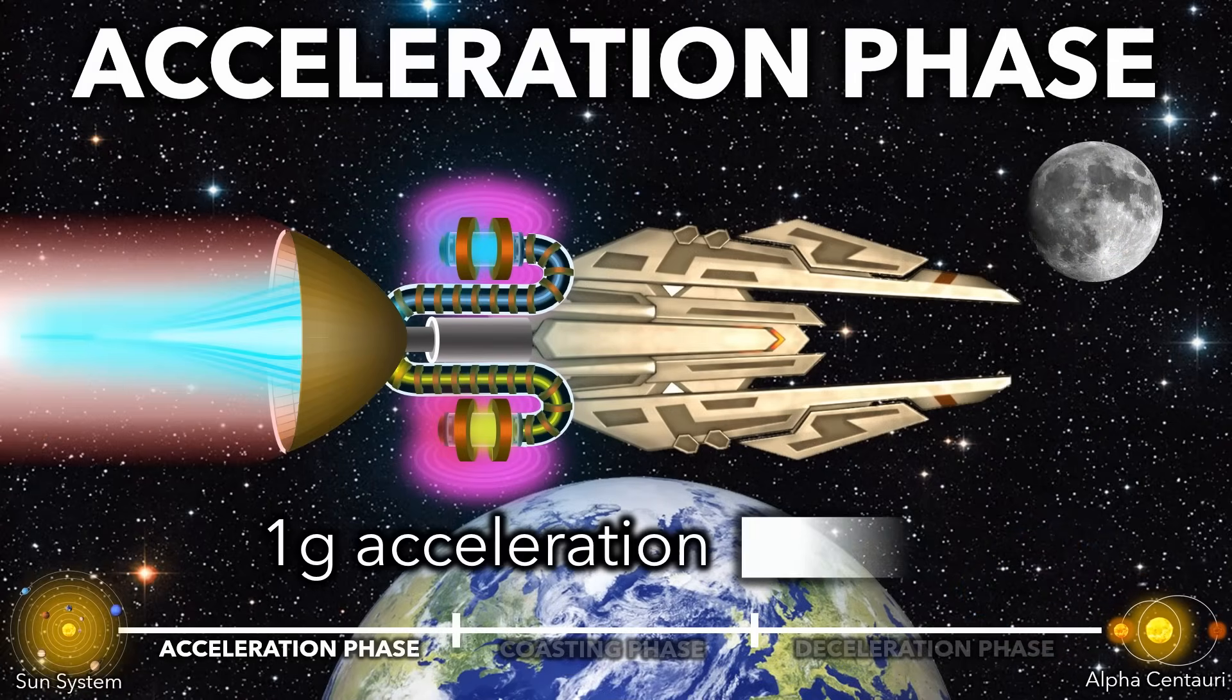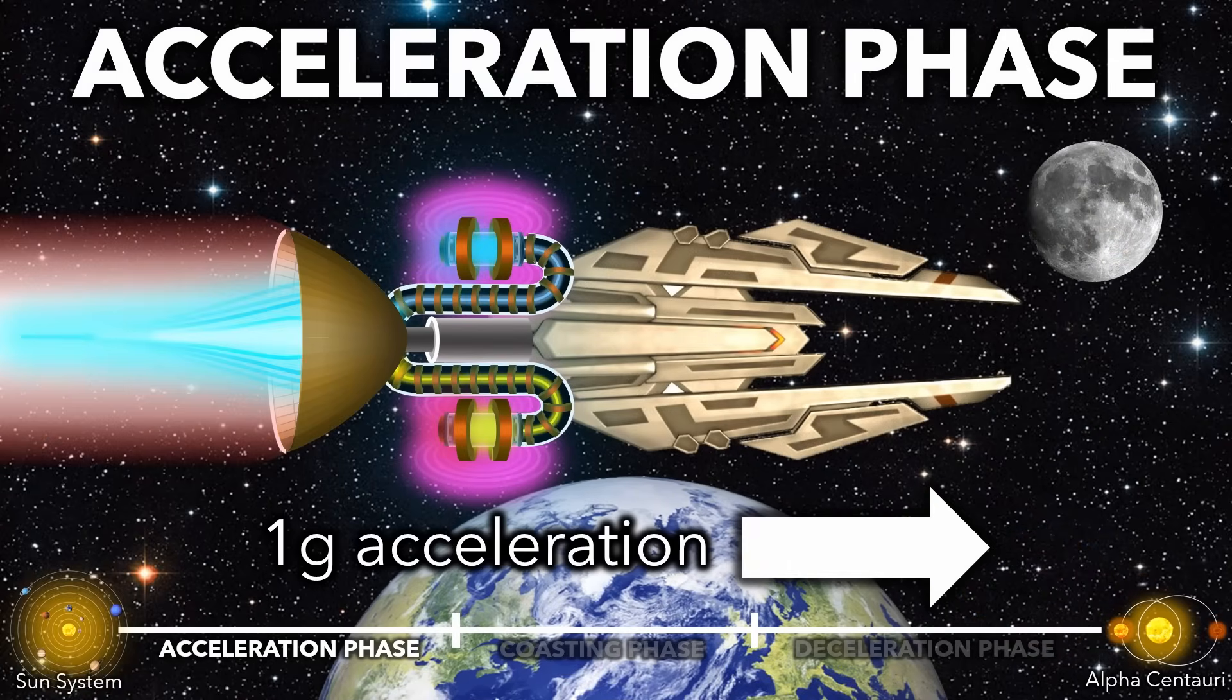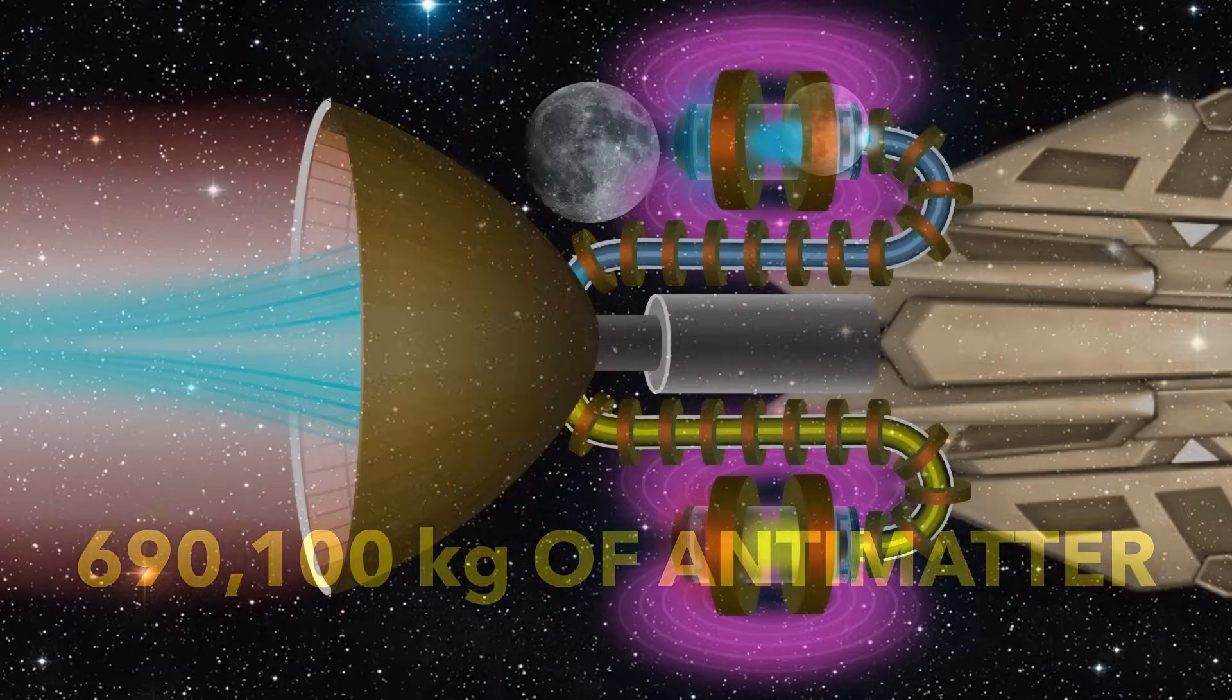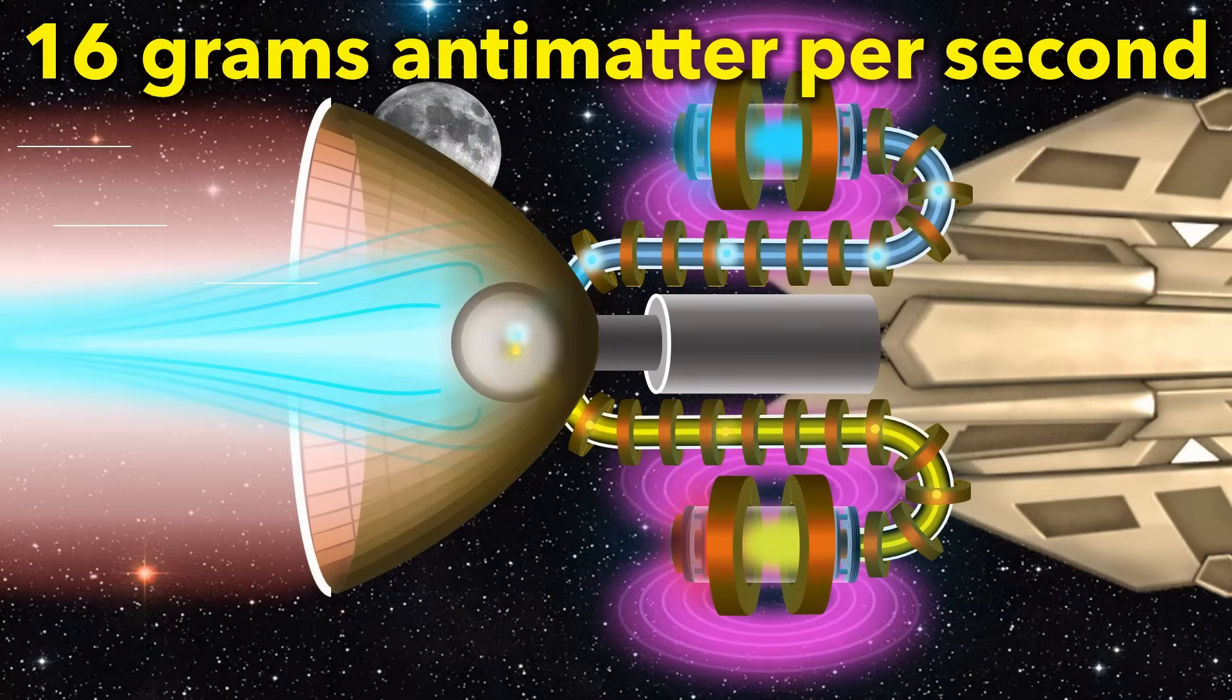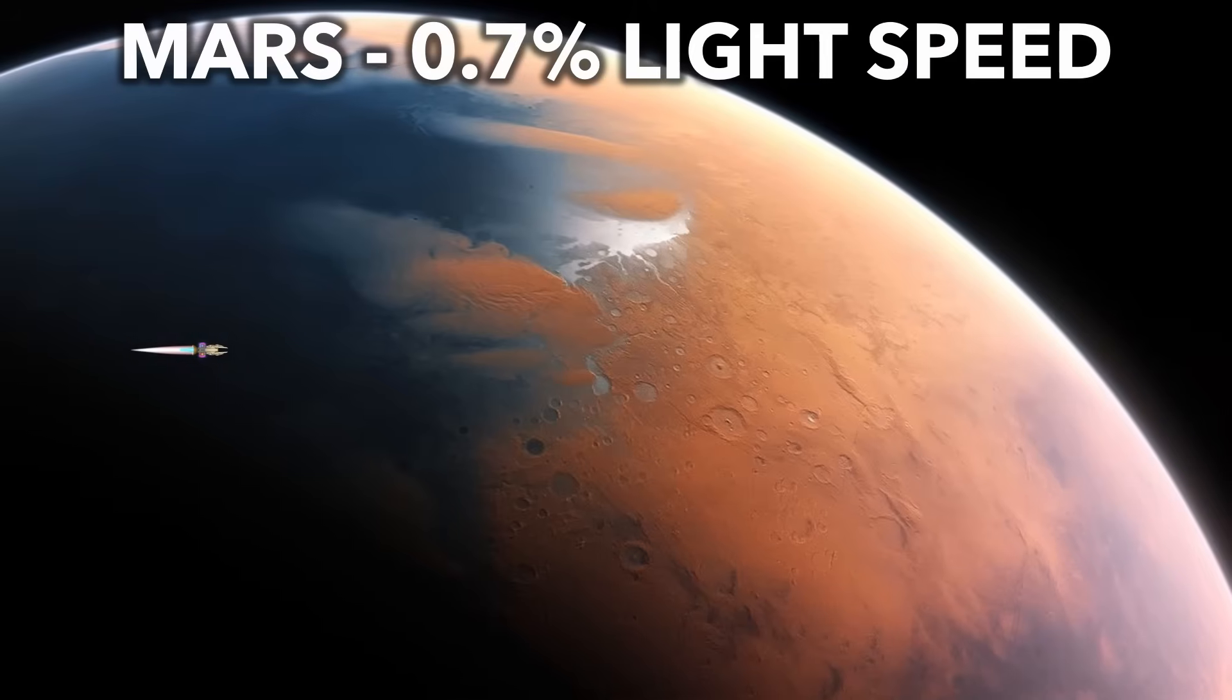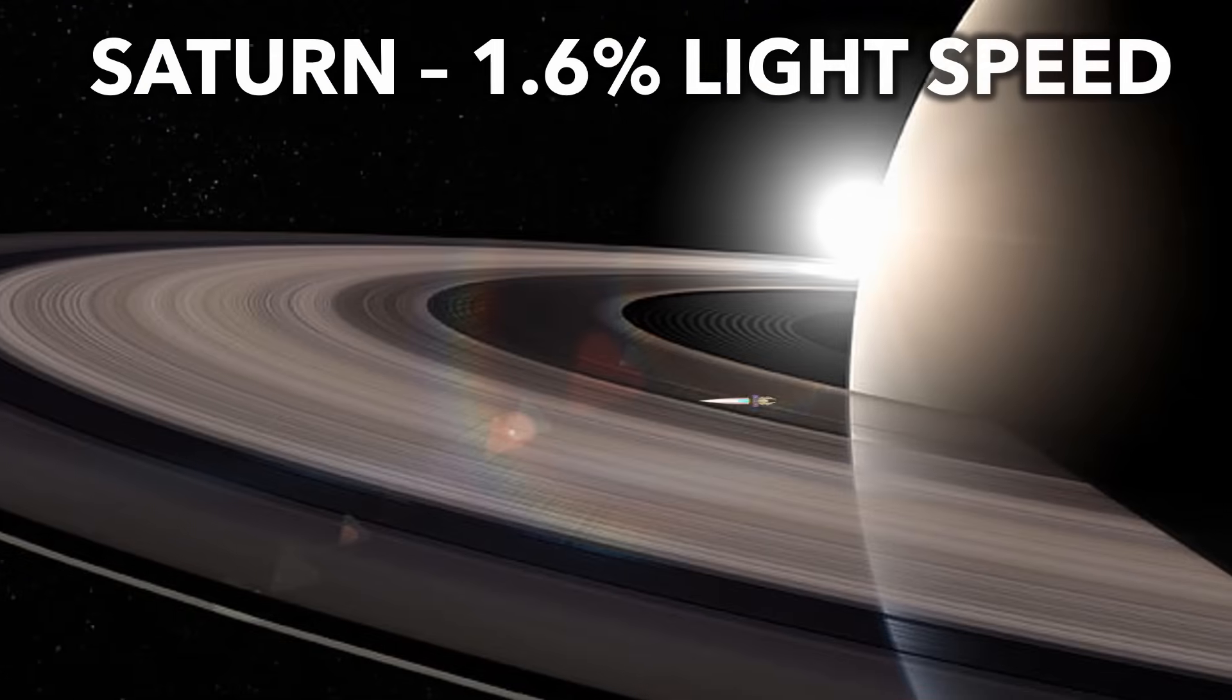We begin accelerating at 1g so that it feels like Earth's gravity for those on board. The acceleration phase uses 700 tons of antimatter, or 16 grams a second, the energy of 42 Hiroshima bombs every second. The ship quickly gains speed as it passes through and leaves the solar system.